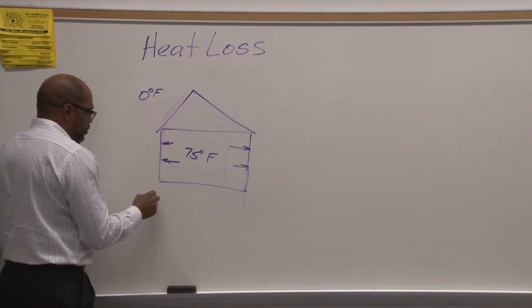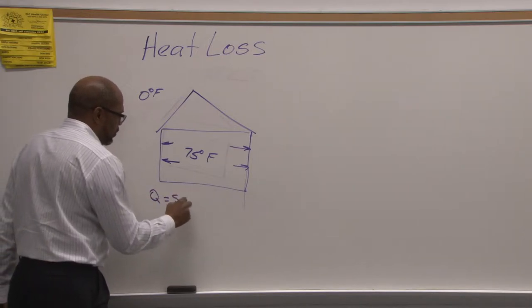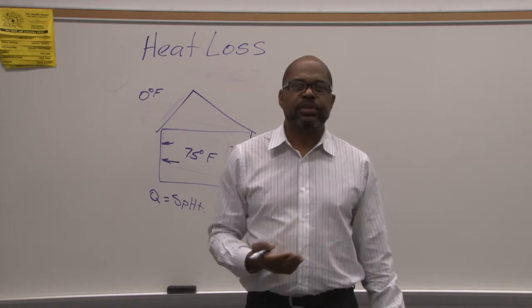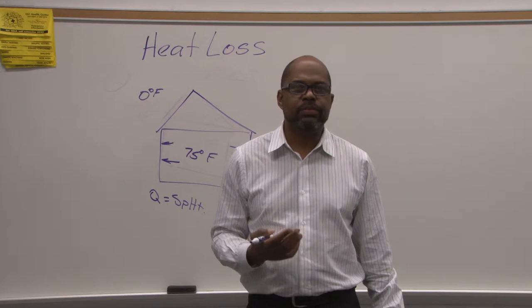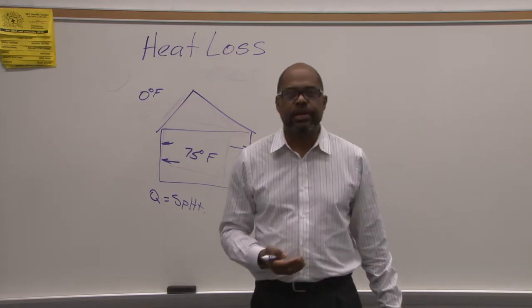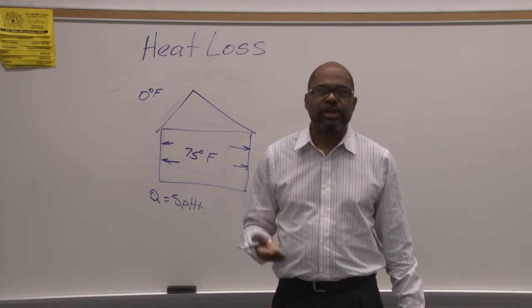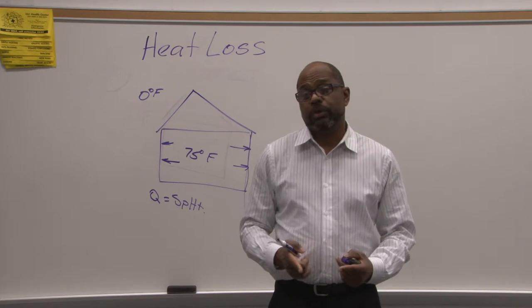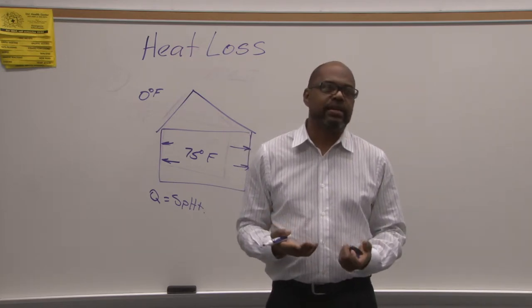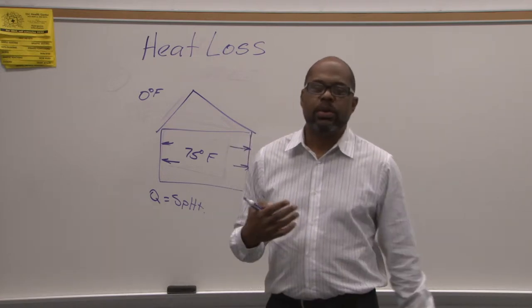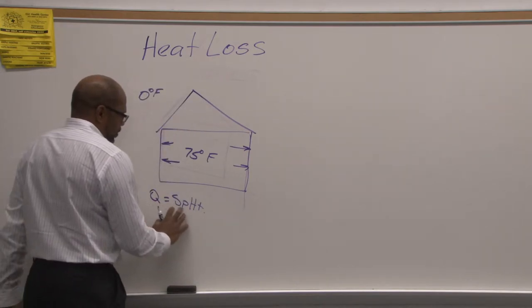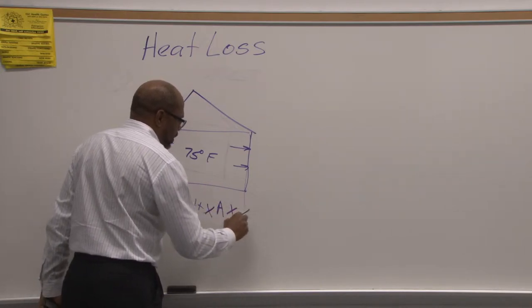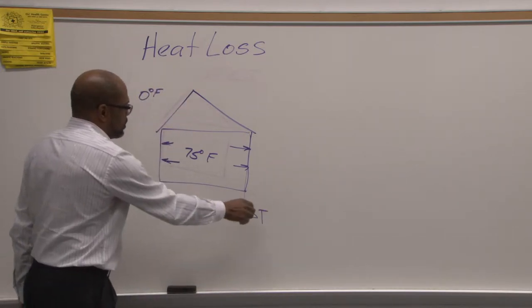And taking the heat transfer formula is that Q equals the specific heat. And the specific heat is basically the materials of the house. Every substance, every different type of material will have a specific heat reading. Specific heat is basically the amount of energy it takes to raise or lower that substance one degree Fahrenheit based on every pound or change it by every square foot of it. If we take the specific heat and multiply it by the area of the material times its temperature difference, or the delta T. The delta T is the change in temperature.